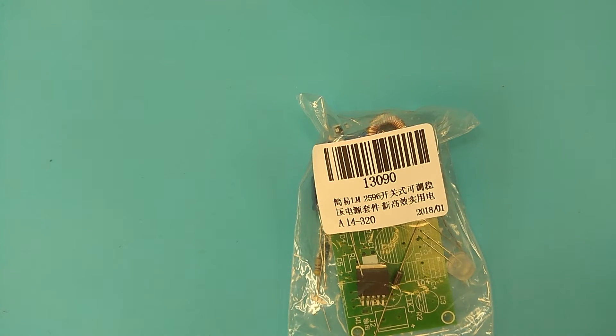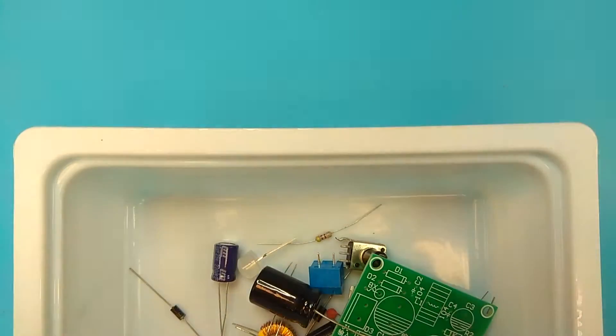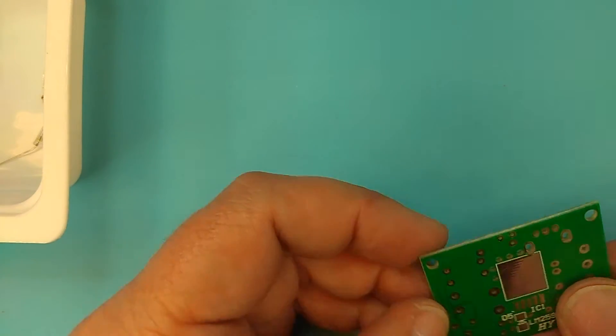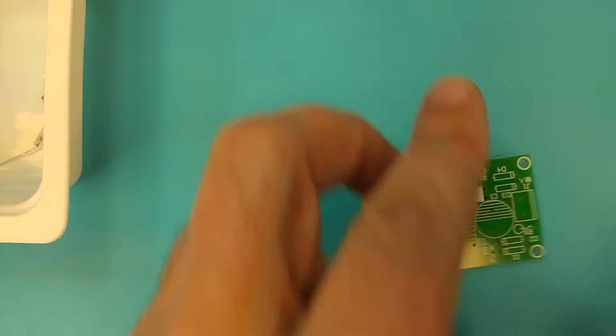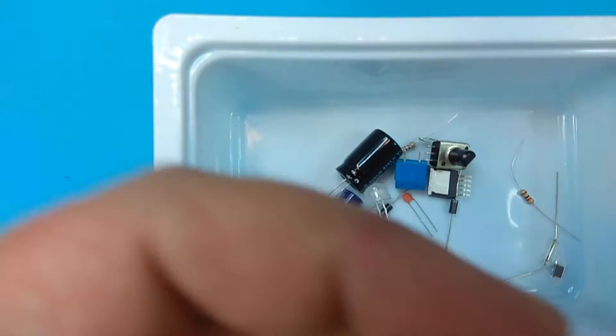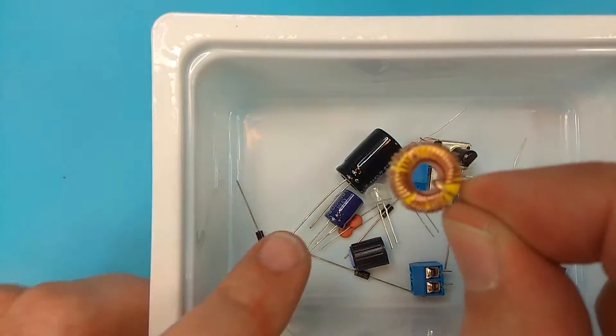Its number is 13090. Let's see what's in the bag. Well, a nice PCB and some components. The coil, that's why it has a switching power supply.